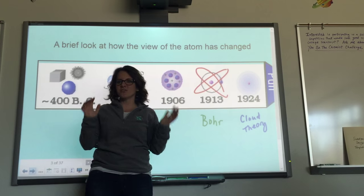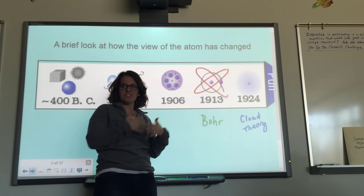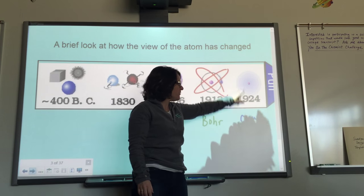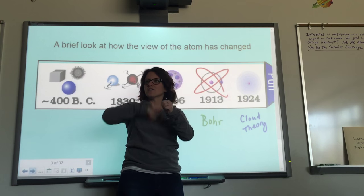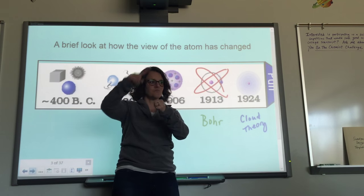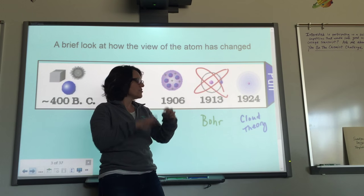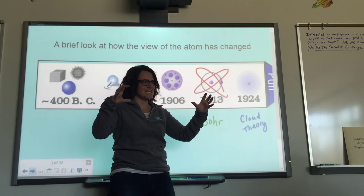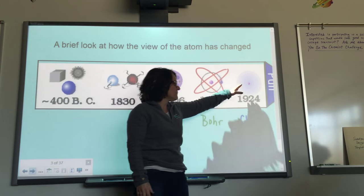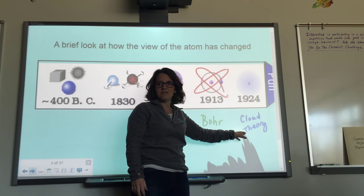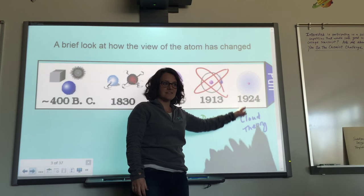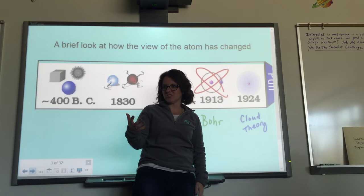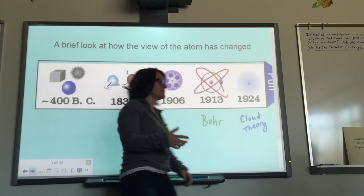But that's not actually the way it looks now, because the technology keeps advancing. This is called the cloud theory, where the electrons aren't in specific rings or definite paths — they're actually in probability clouds. So it starts getting more and more complicated, and I don't even think this is going to remain the current theory. It's just going to get more and more advanced as technology advances.